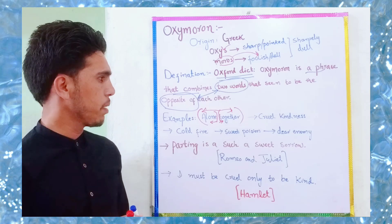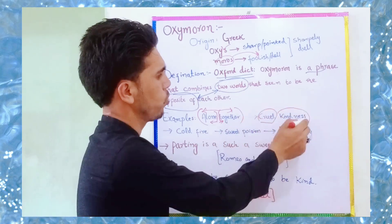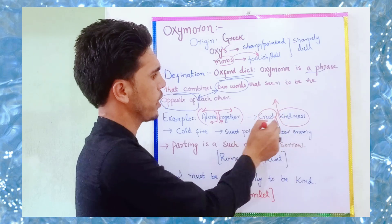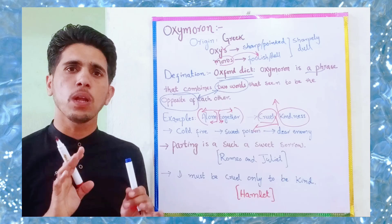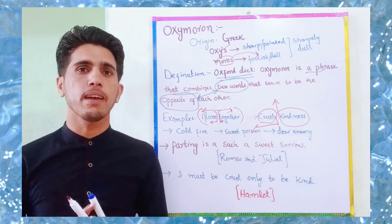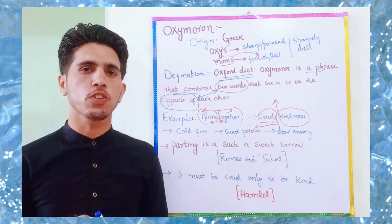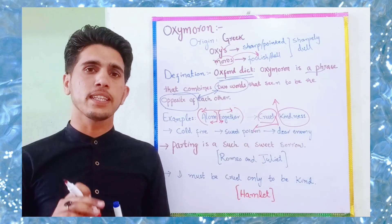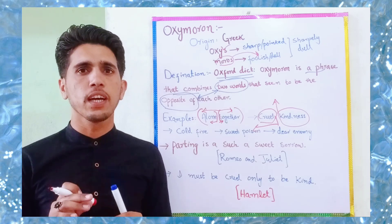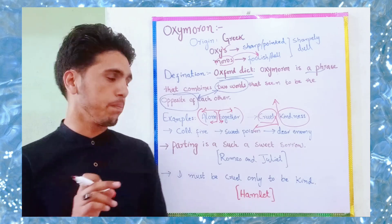The second example is 'cruel kindness.' Here you see two different ideas — cruelness and kindness are pole-apart ideas, but they are put together in order to create emphasis. This is the beauty of oxymoron: it puts two distant ideas and distant words together, but creates a meaning out of them.